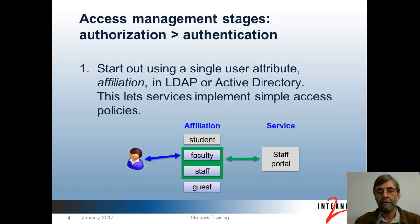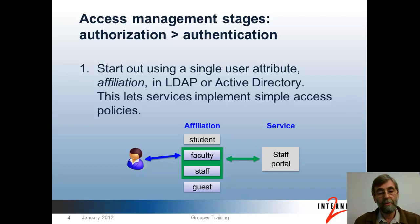Depicted here, for example, we see a faculty person logging in to a staff portal. The staff portal, when processing authentication, gets the affiliation attribute out of LDAP or Active Directory. Because, as indicated in green here, the staff portal is configured to let folks with the faculty affiliation in, it will do so. If that person were a student, they wouldn't get in because they don't have a qualifying affiliation.